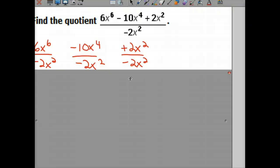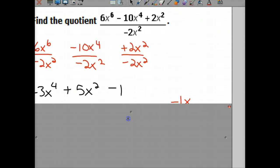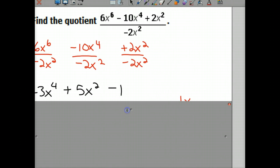Letter times letter add exponents. Letter divided by letter subtract exponents. So let's look here. 6 divided by negative 2 is negative 3. x⁶ divided by x², you subtract exponents to get x to the 4th. Negative 10 divided by negative 2 is positive 5.